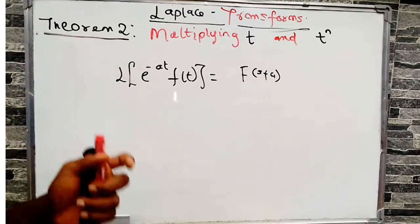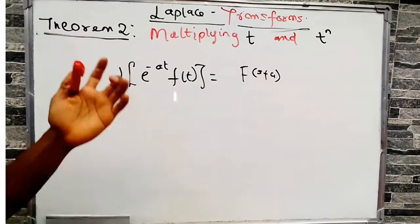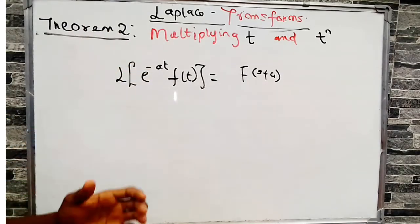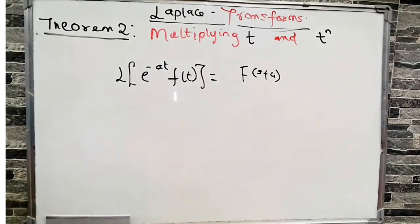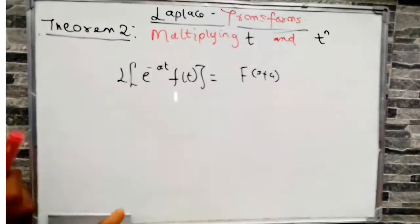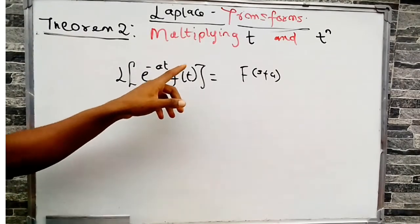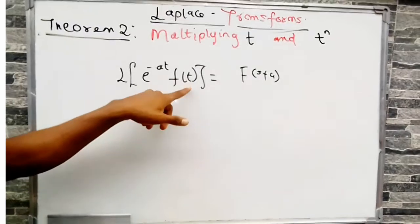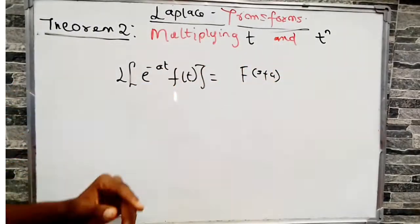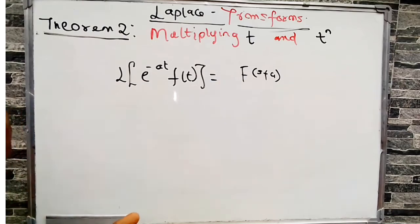Today we are going to look at our second theorem. There are about three theorems we are going to consider in Laplace transformation which help make our solving easier. Today we look at the second shift theorem, which deals with multiplying by t and t raised to power n — how we handle a function of t multiplied by t or by t^n.